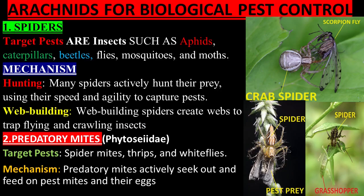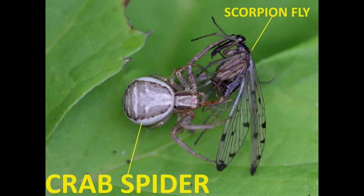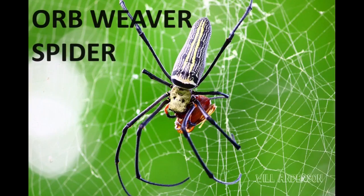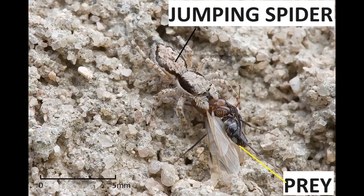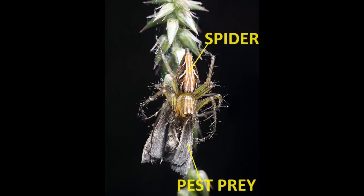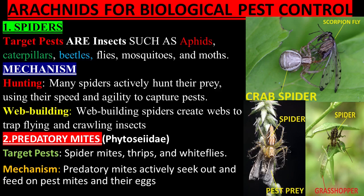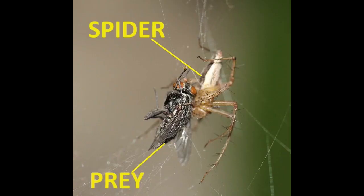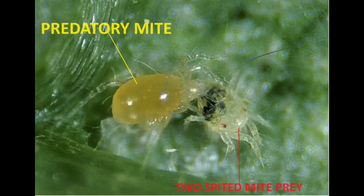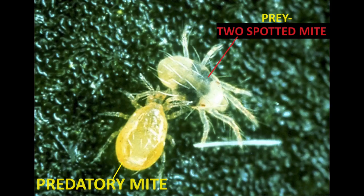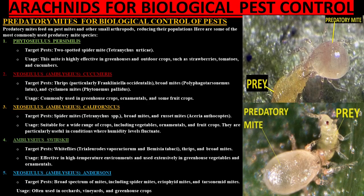Arachnids for biological pest control. Spiders: target pests are insects such as aphids, caterpillars, beetles, flies, mosquitoes, and moths. Many spiders actively hunt their prey using their speed and agility to capture pests. Web-building spiders create webs to trap flying and crawling insects. Predatory mites target pests such as spider mites, thrips, and whiteflies. The beneficial mites actively seek out and feed on agricultural pest mites and their eggs.